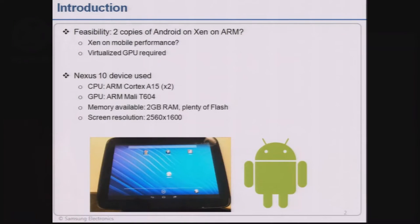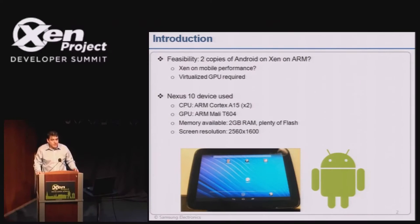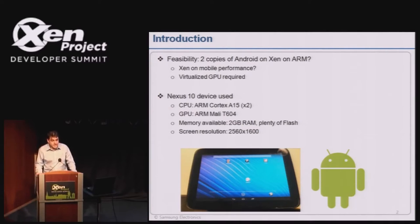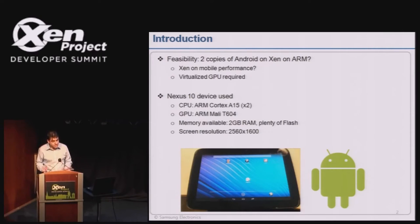The feasibility of this project was to try and run two Androids on Nexus 10, on Xen on ARM, with a really good user experience. Xen is for servers and we wanted to see if it can run on mobile. Android uses the GPU heavily for all of its graphics, scrolling, and menus, so the big challenge is to virtualize the GPU between both domains.